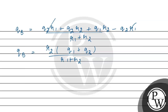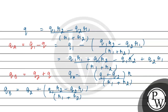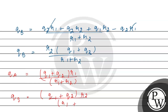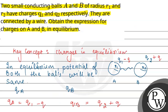So the charges in equilibrium are: QA equals (Q1 + Q2)·R1 divided by (R1 + R2), and QB equals (Q1 + Q2)·R2 divided by (R1 + R2). These are the charges in equilibrium. Hope you understood it well. Best of luck.